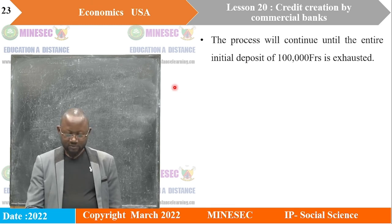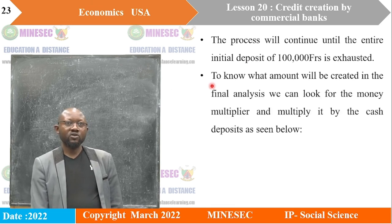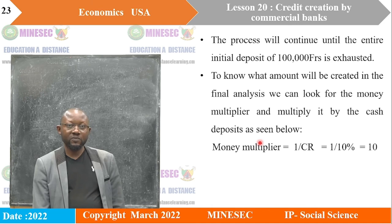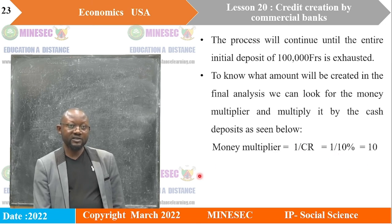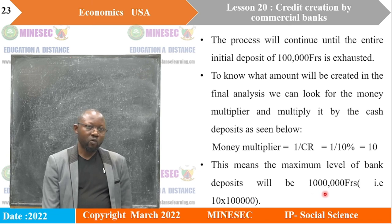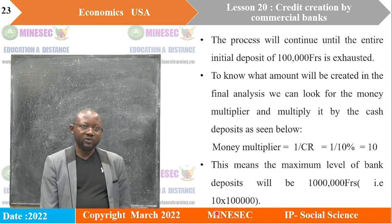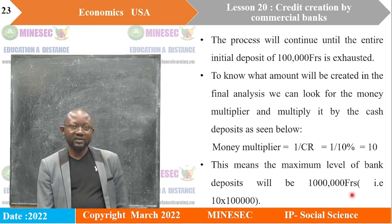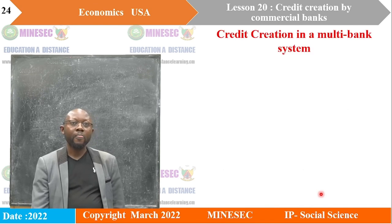The bank now has received a new deposit of 90,000 francs, and will again keep 10% — which is 9,000 francs — while the rest, 81,000 francs, will be used to create further credit. This process will continue until the entire initial deposit of 100,000 francs is exhausted. To know the total deposit created, we look for the money multiplier and multiply it by the initial cash deposit. The money multiplier is 1 divided by the cash ratio of 10% equals 10, so the maximum level of bank deposits is 10 times 100,000 equals 1,000,000 francs.